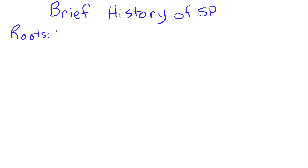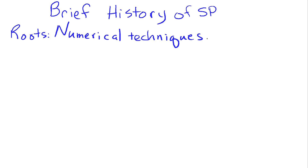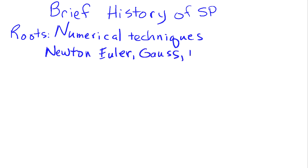Signal processing is a relatively recent field, but it has a very long history. The roots of signal processing started back with numerical techniques for solving complicated equations, and people that worked on these things included real well-known physicists, mathematicians, such as Newton and Euler, Gauss, Fourier — some of these names will come up as we work in this area.